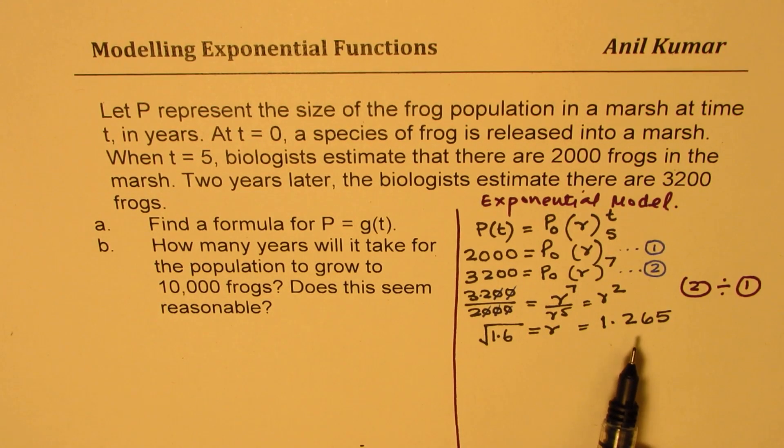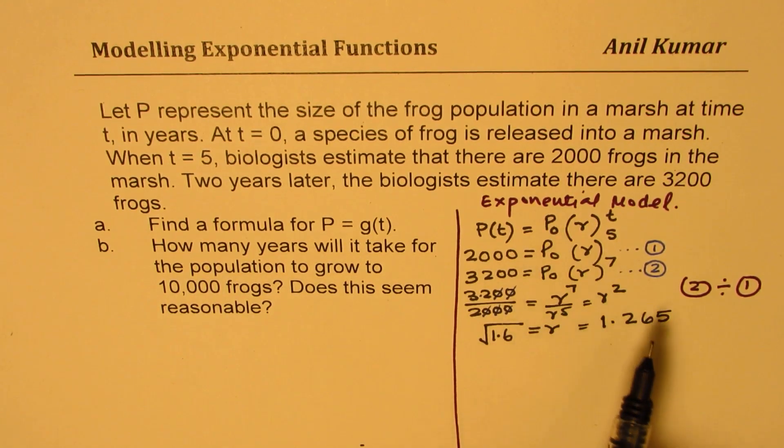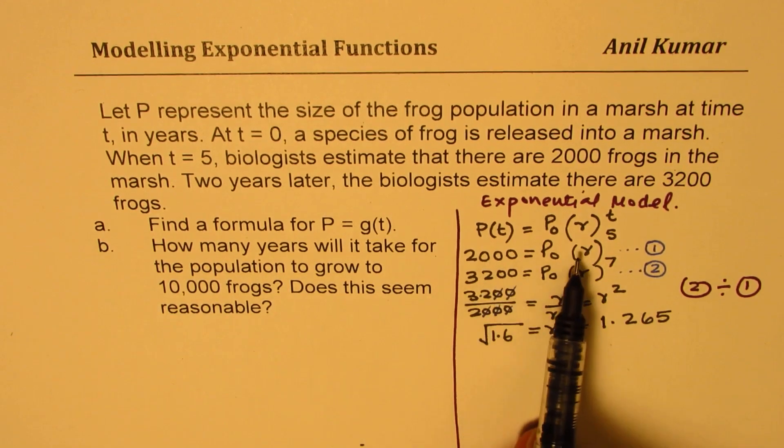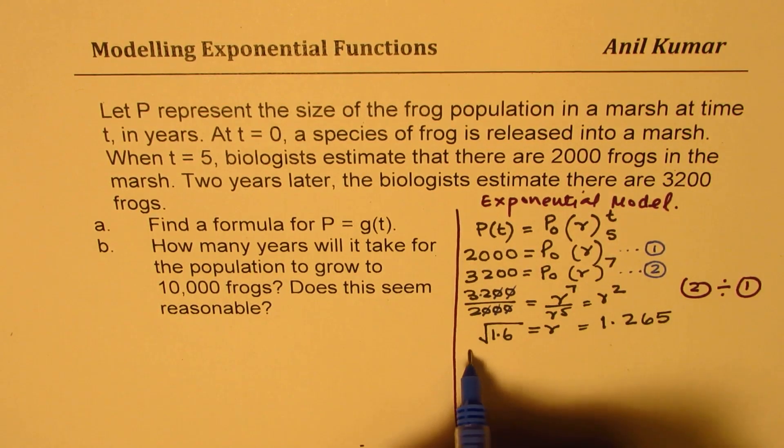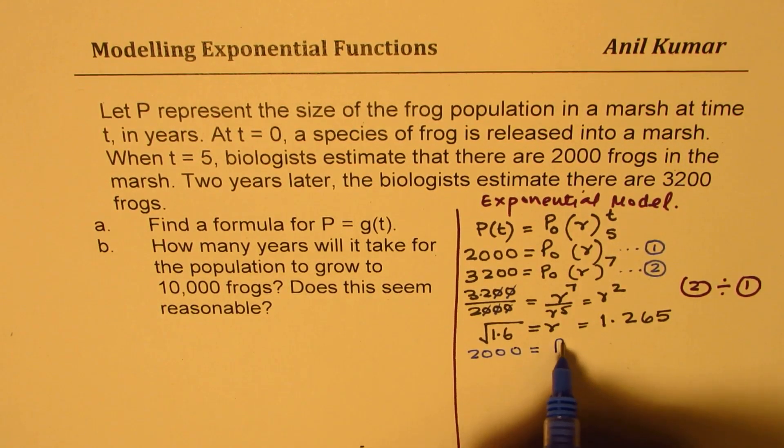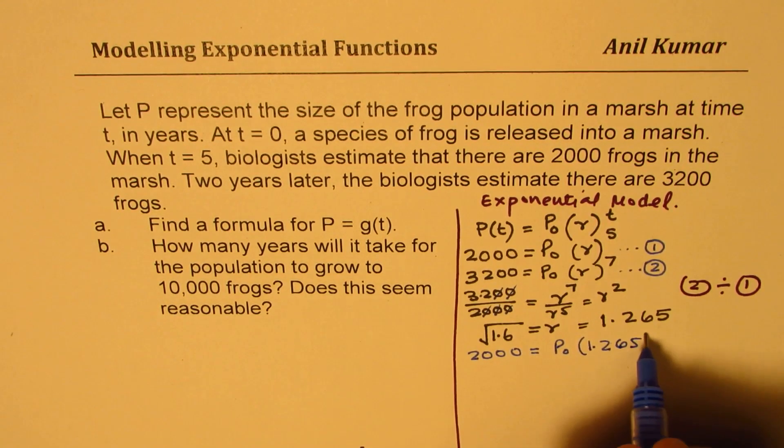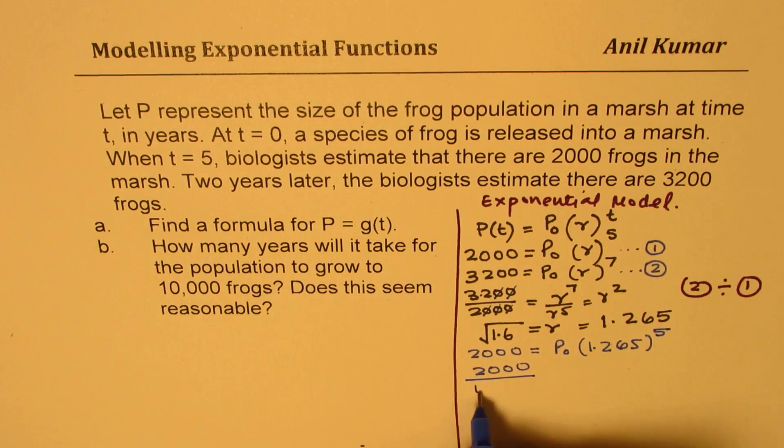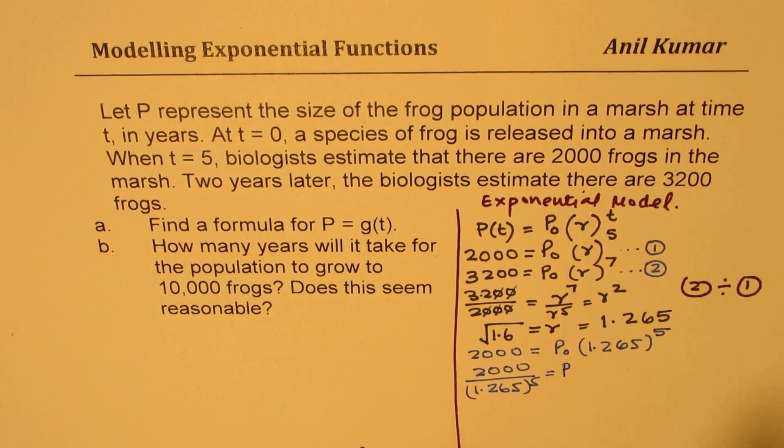Once we know the rate of growth, we can find the initial population introduced using any one of our equations, right? So let's use the first equation and find P0. So what we get here is 2,000 equals to initial population, r value is 1.265 to the power of 5, correct? So from here, we get 2,000 divided by 1.265 to the power of 5 as the initial population.